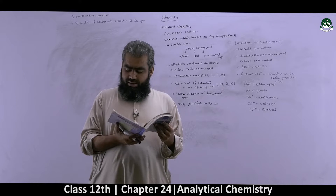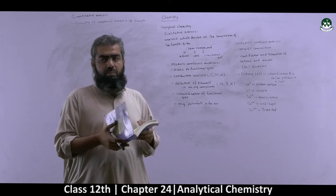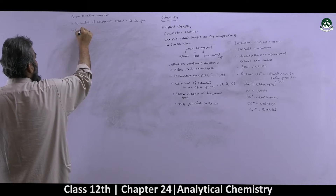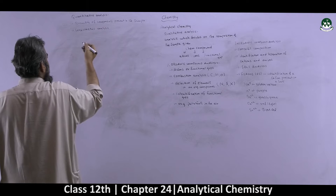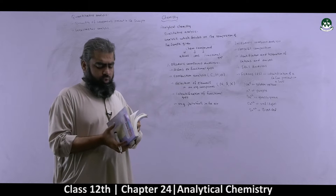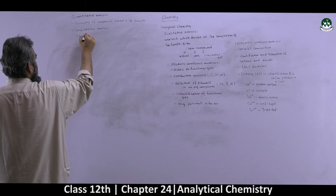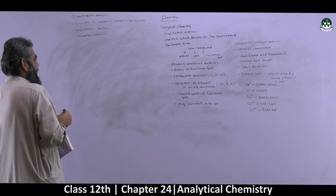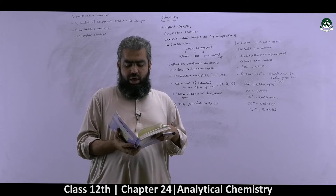In quantitative analysis we use different methods. Two important methods given in your book are: number one, gravimetric analysis, and number two, titrimetric analysis. Through these two different methods you can analyze the quantity of any component present in a given sample.